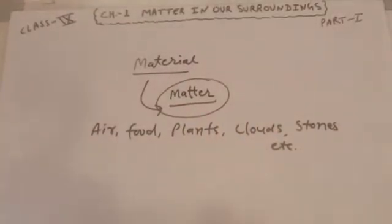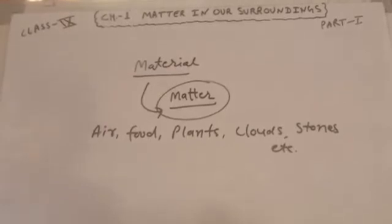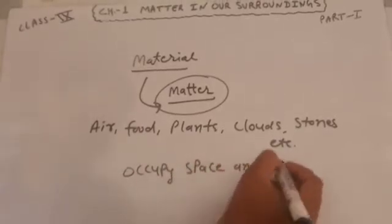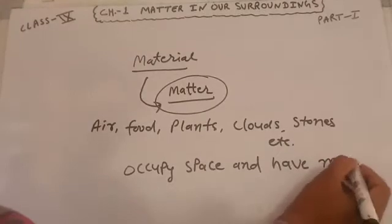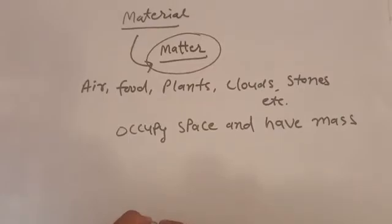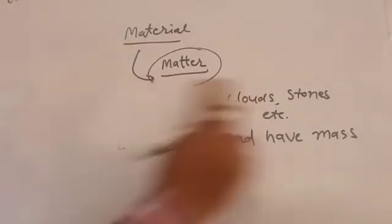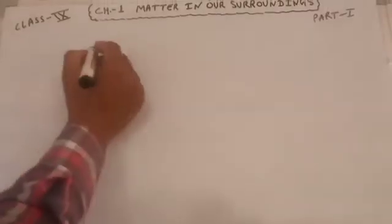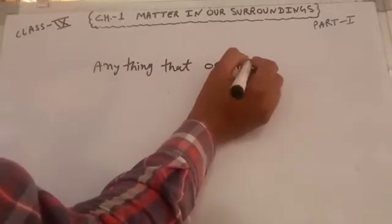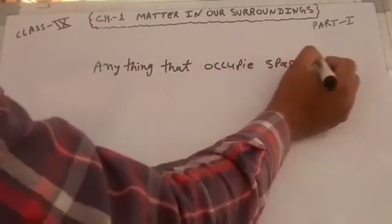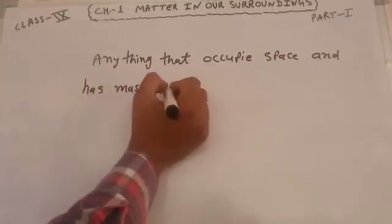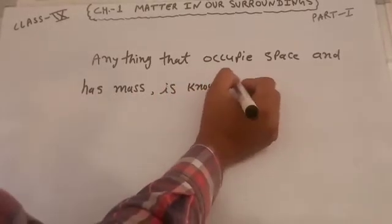We can also see that all the things mentioned above occupy space and have mass. In other words, anything that occupies space and has mass is known as matter.